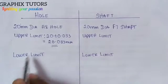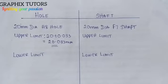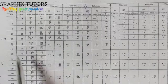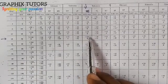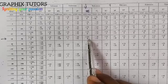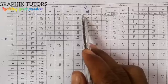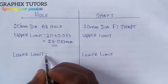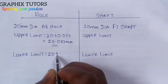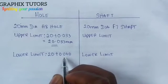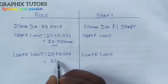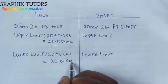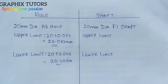We also have 0 as the lower limit deviation. Multiplying 0 by 0.001 gives 0.000mm. Adding that to the nominal diameter: 20 plus 0.000 gives us 20.000mm. So, 20.000mm is the lower limit of the hole.